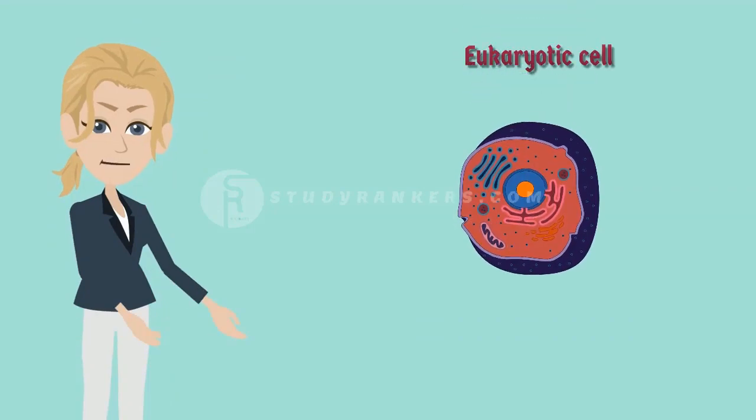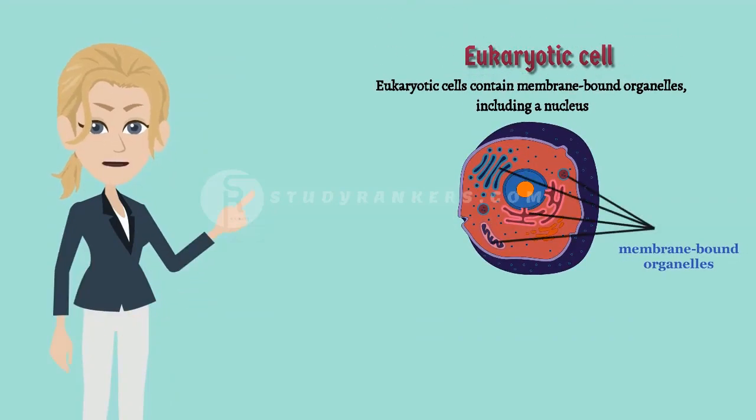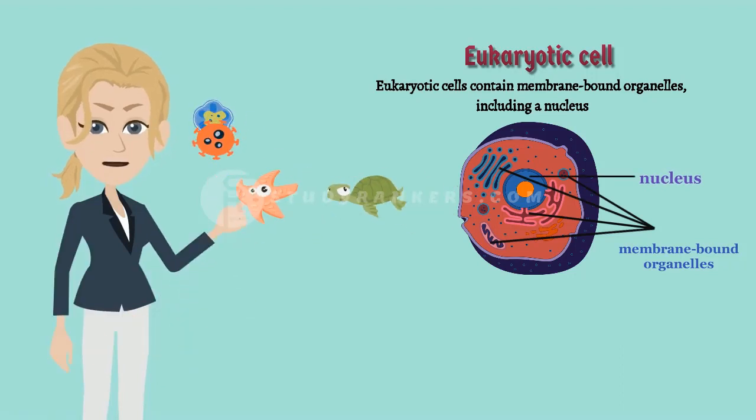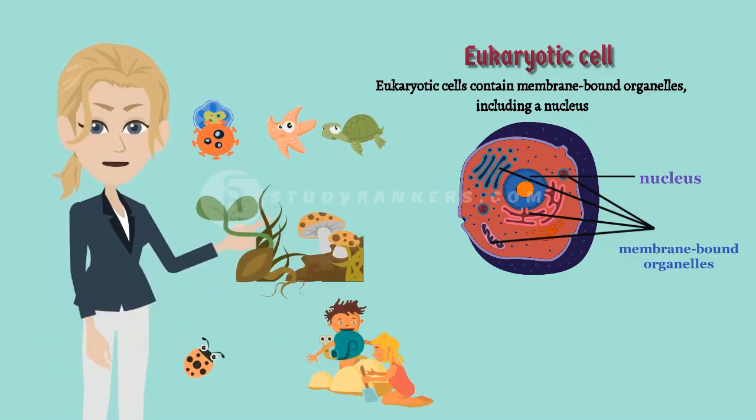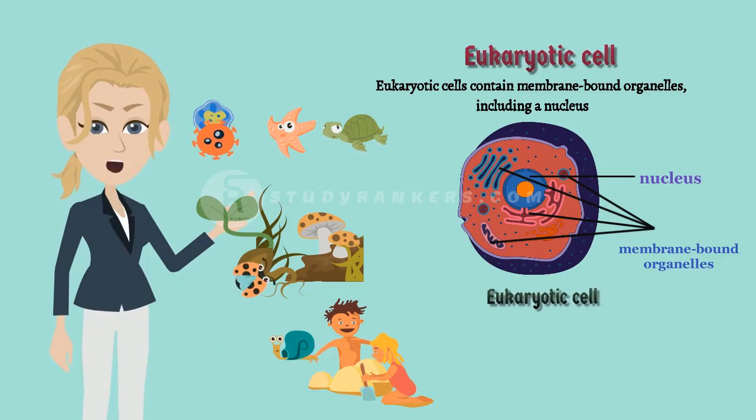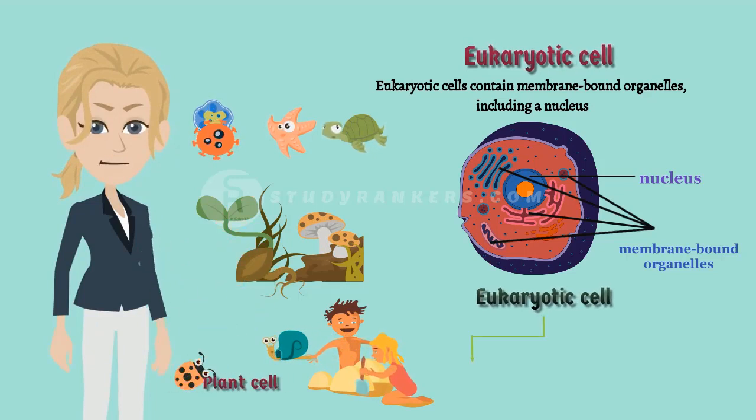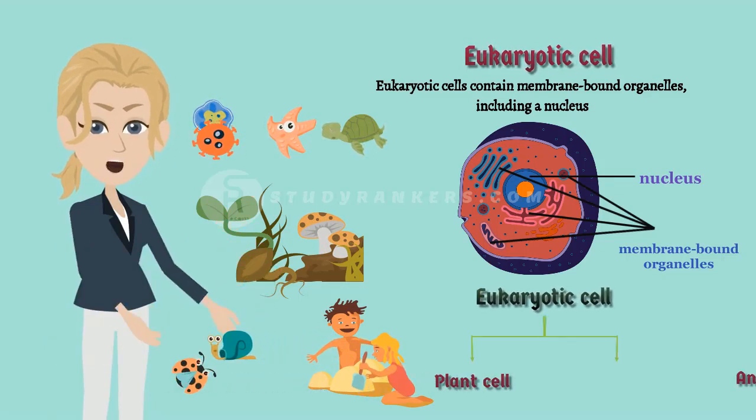Eukaryotic cells contain membrane-bound organelles including a nucleus. Eukaryotes can be single-celled or multi-celled such as you, me, plants, fungi and insects. The eukaryotic cells are of two types. They are plant cell and animal cell.